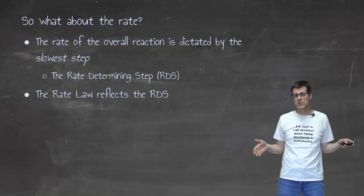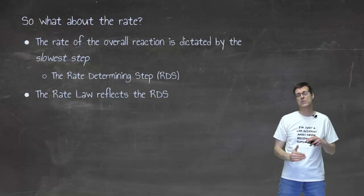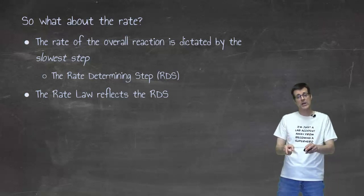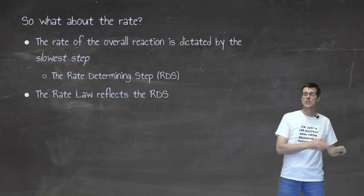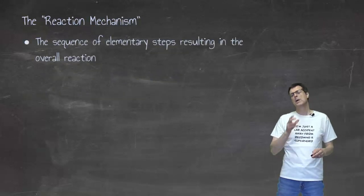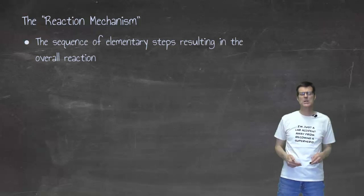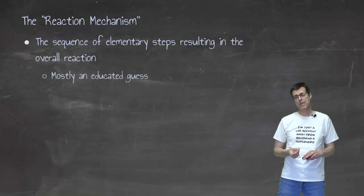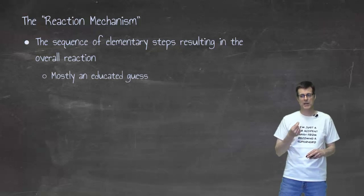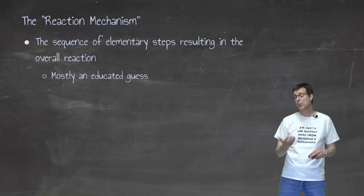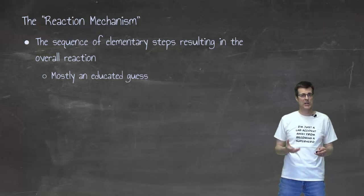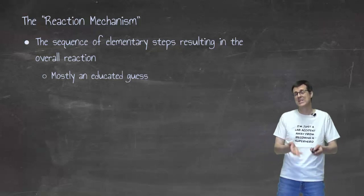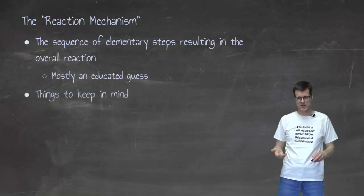I can't derive a rate law from the overall reaction, but if I have the sequence of elementary steps that make up the overall mechanism, then I can say this elementary step looks like the rate law. A reaction mechanism is a sequence of elementary steps where everything involves either one or two things colliding, and it is really understood to be an educated guess. There are a couple of things that can help us make a better guess, but it is just an educated guess because we're suggesting intermediates that we don't know for sure exist. We can't actually see what's going on, so we're making guesses about what's going on.